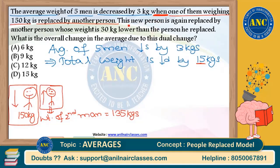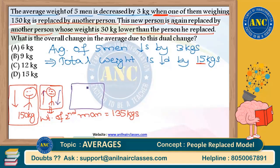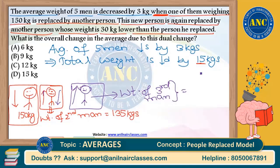I hope you are clear with this. Now read the next statement: this new person is again replaced by another person whose weight is 30 kg lower than the person he replaced. That means the second person of 135 kg also leaves, and a third person joins. The third person's weight is 30 less than 135 kg, which is 105 kg.